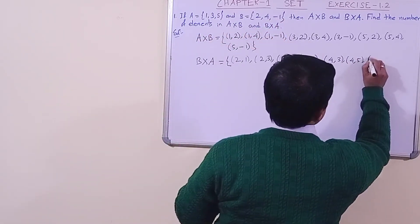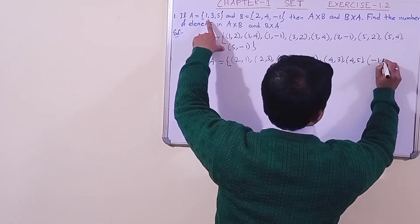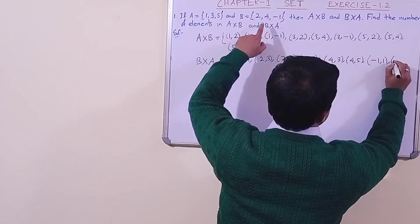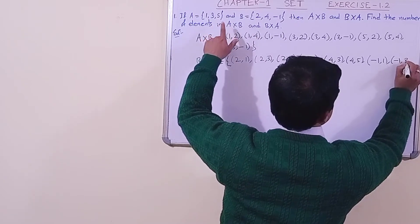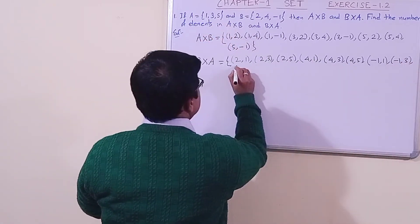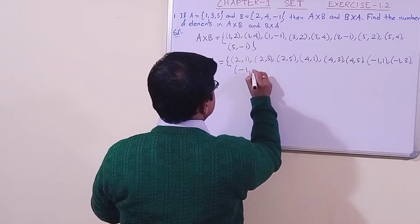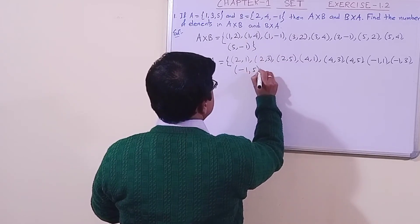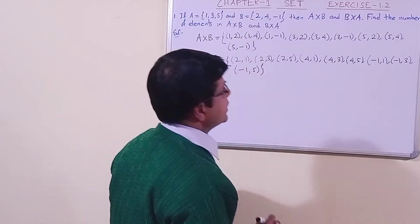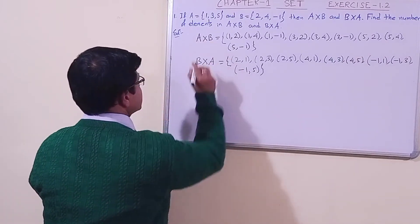Now what is left — minus 1. Minus 1 is connected with 1, then minus 1 and 3, then minus 1 and 5. In this way we have made all the ordered pairs for B cross A. That completes the first part of the question.